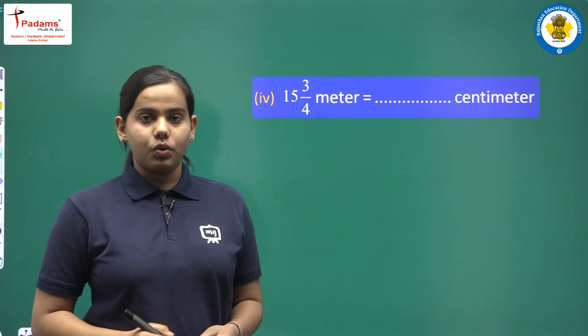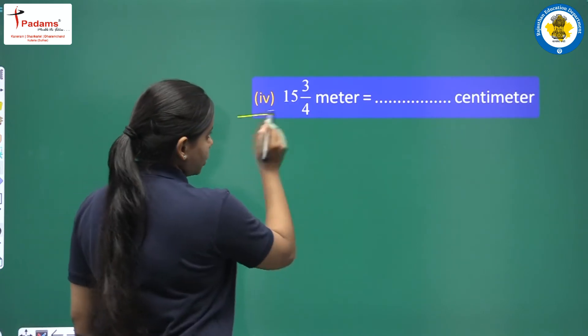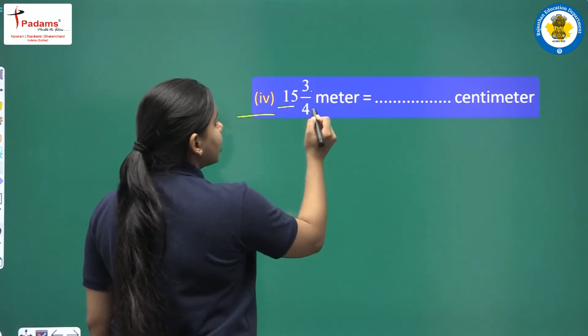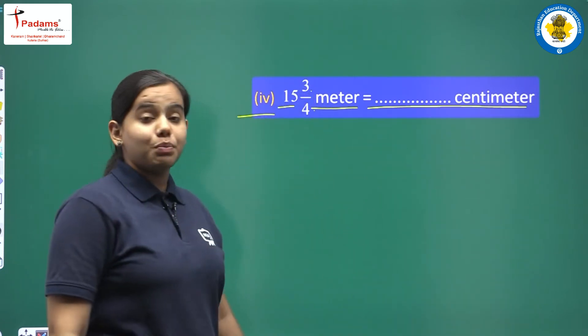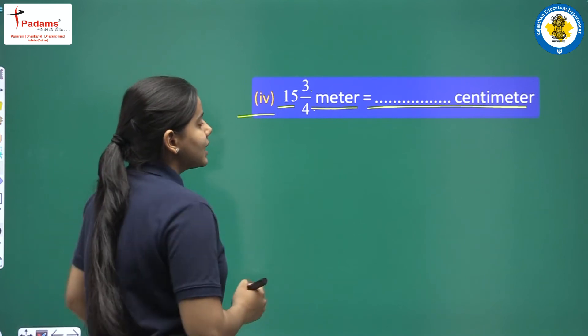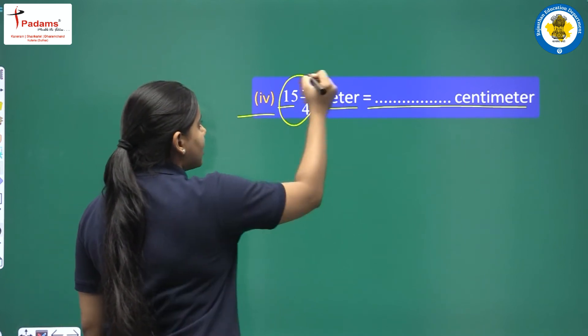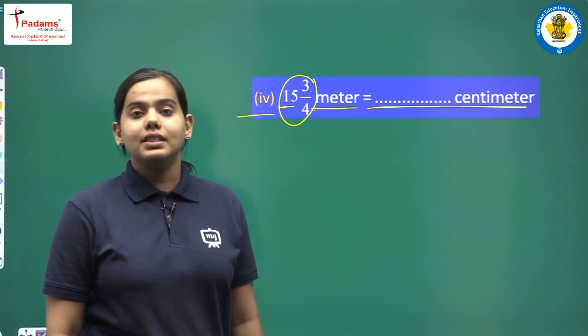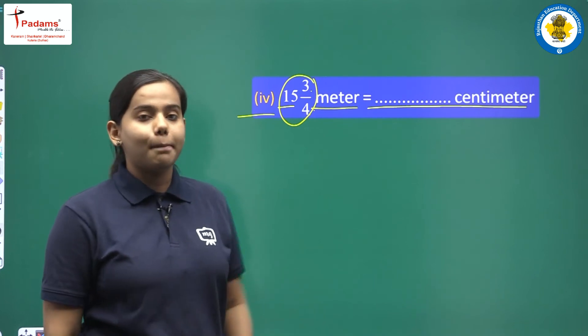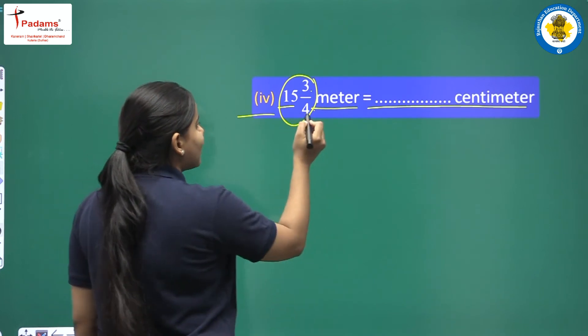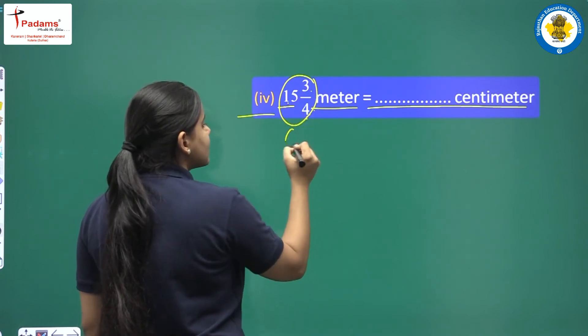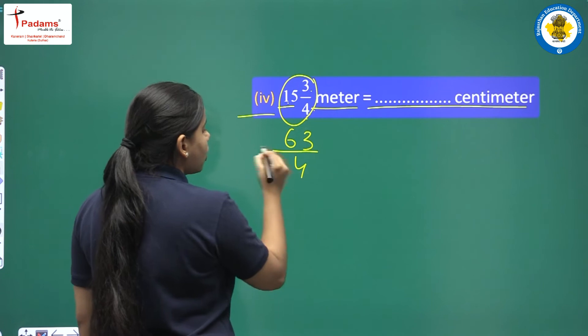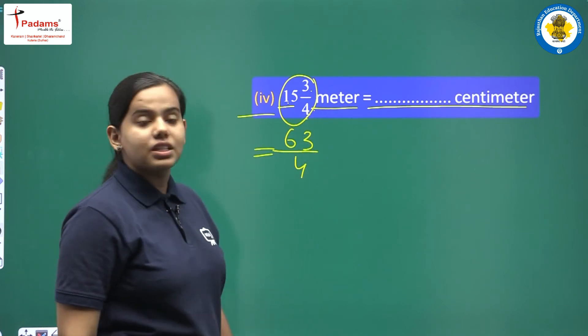Now let us move on to next question. This is the fourth question. 15 whole 3 upon 4 meter equals dash centimeters. Meters we have to change into centimeters. How will we do? Again you know that this mixed fraction first step will be to change it into improper fraction. You can directly do it. 4 times 15 is 60. 60 plus 3 is 63. And denominator remains same, 4 as it is.